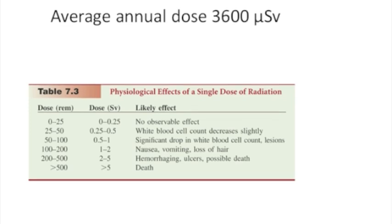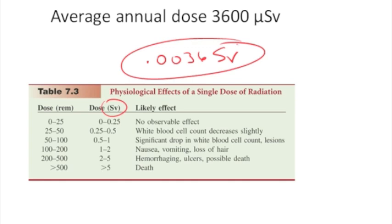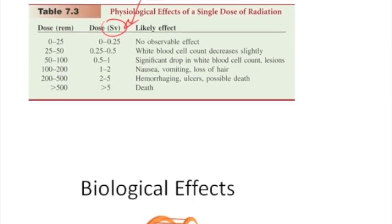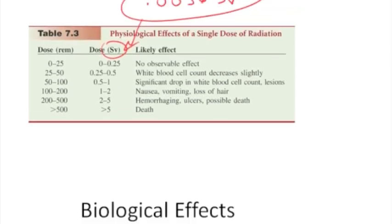And so if you compare that back to the physiological effects, this, again, is just SVs, so this would be the same as 0.0036 SVs per year. So the background, the long and short of this story here is the background radiation, this is the average annual background radiation, is less than an observable effect in a single dose. So most people are not affected by this background radiation at all. So that's the story there.